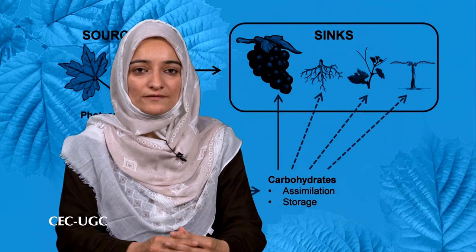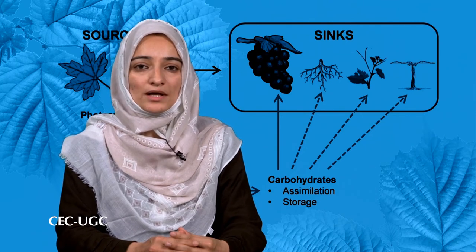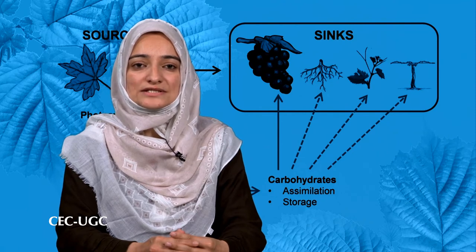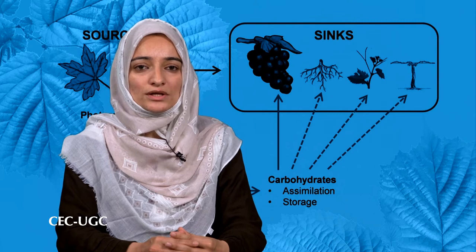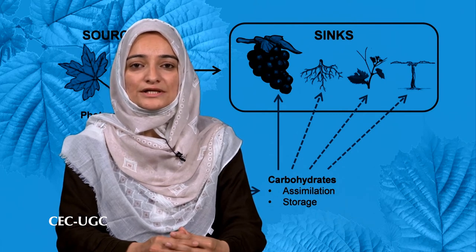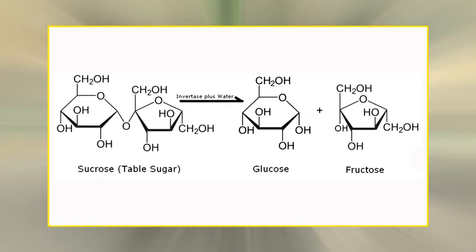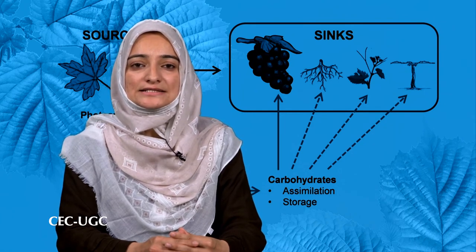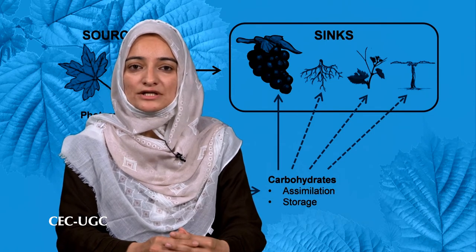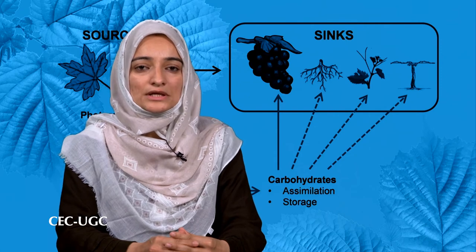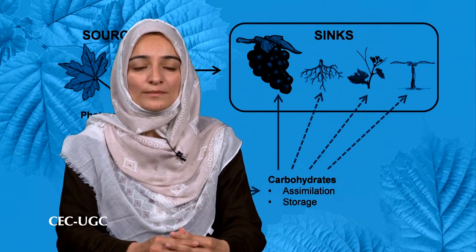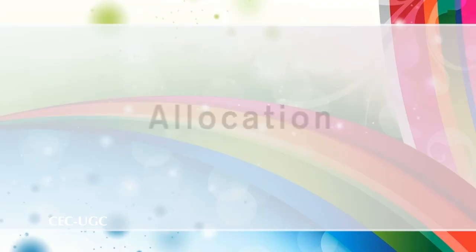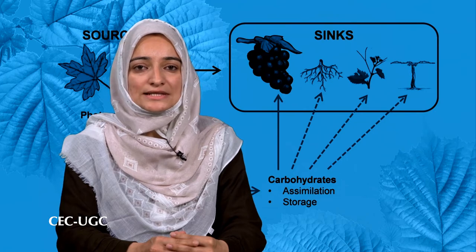In the apoplastic unloading pathway, sucrose released into the apoplast can either directly enter heterotrophic cells through a plasma membrane-bound sucrose transporter, or with the help of cell wall-bound invertase, be hydrolyzed into glucose and fructose, which are later imported inside the cells through a hexose transporter localized in the plasma membrane. Once transport sugars have been unloaded and enter the sink cells, they can remain as such or be transformed into various other compounds. The regulation of diversion of fixed carbon into various metabolic pathways is termed allocation and is a key process in sink tissues.